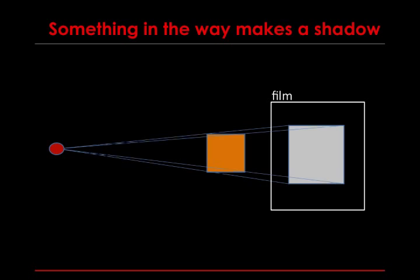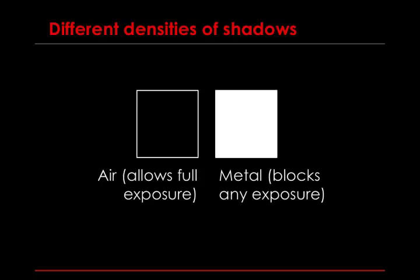There are different densities of shadow. Air allows full exposure, and therefore the film will be virtually black. If it is complete air — like the air outside a human's body, just to the left of their elbow — that X-ray film will be developed black because the X-ray is not being blocked in any way. Metal, on the other hand, blocks all exposure, and therefore the metal shadow will be white.